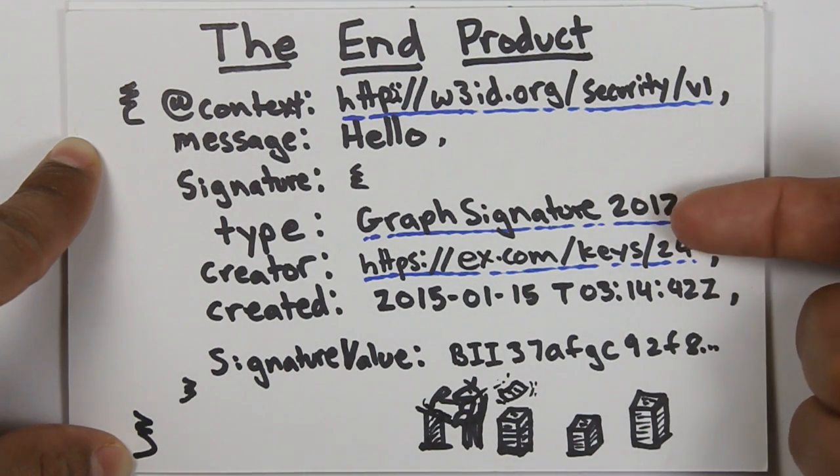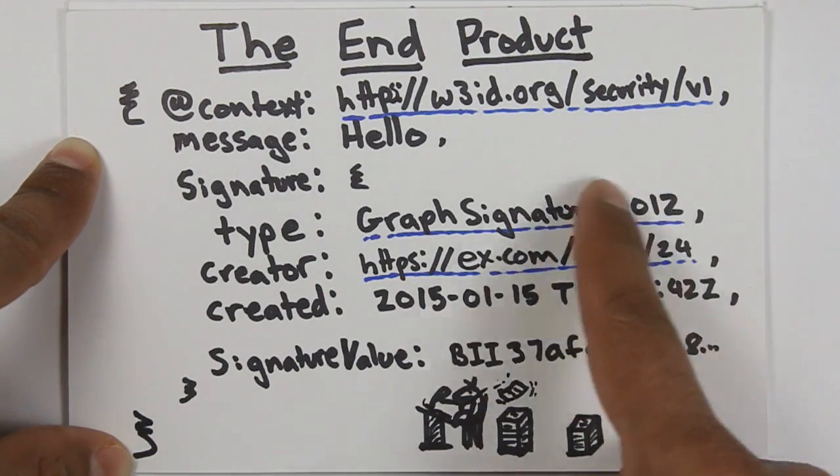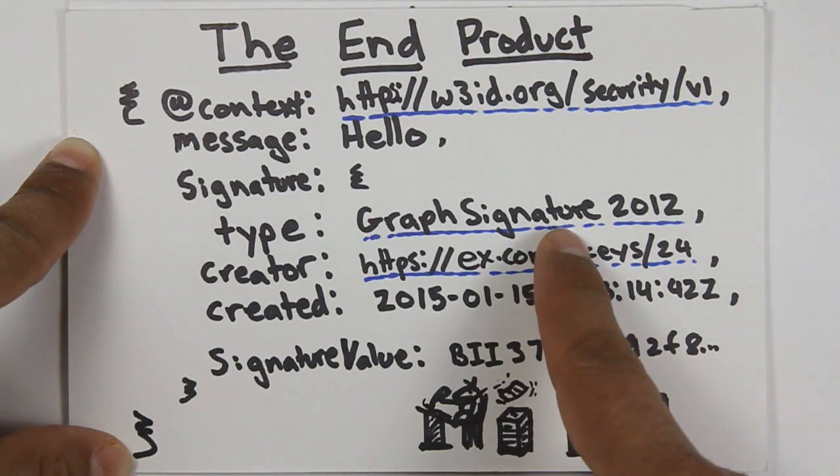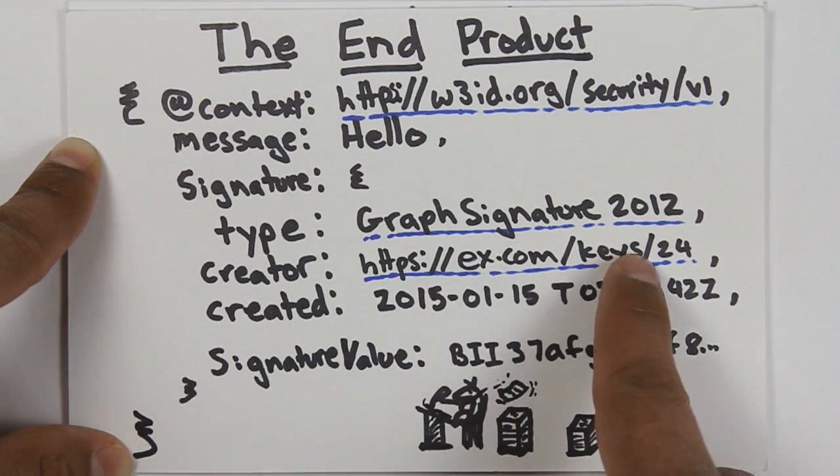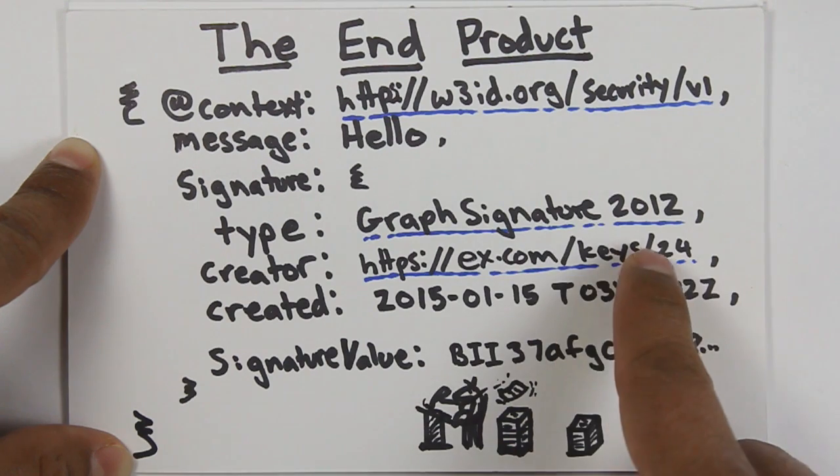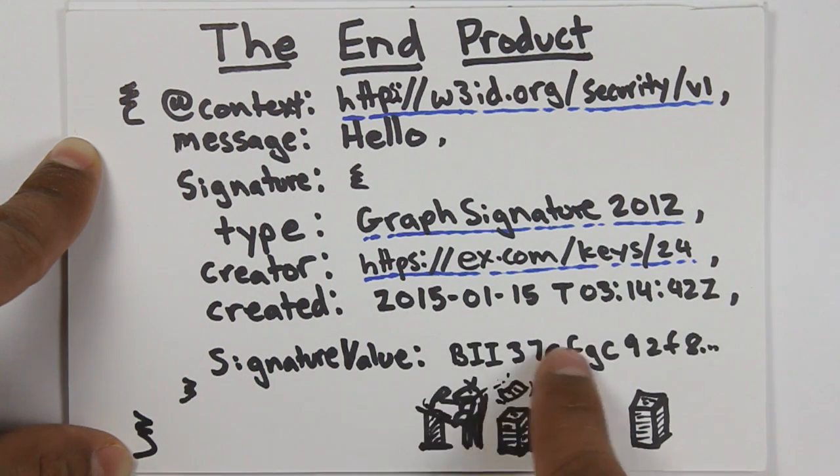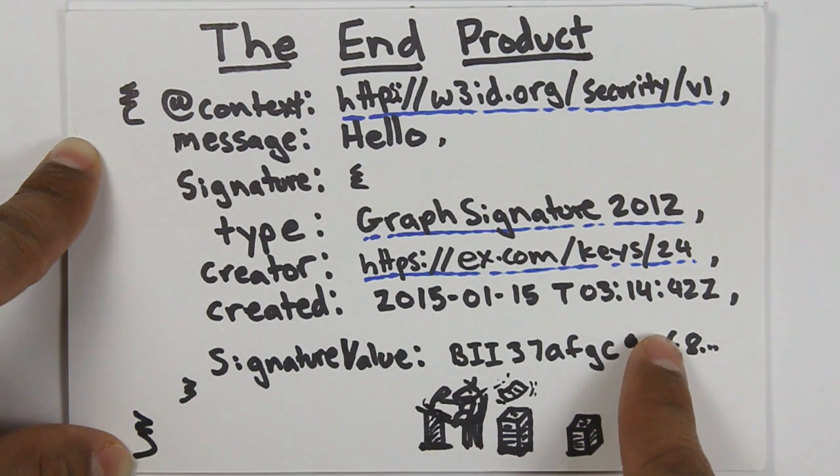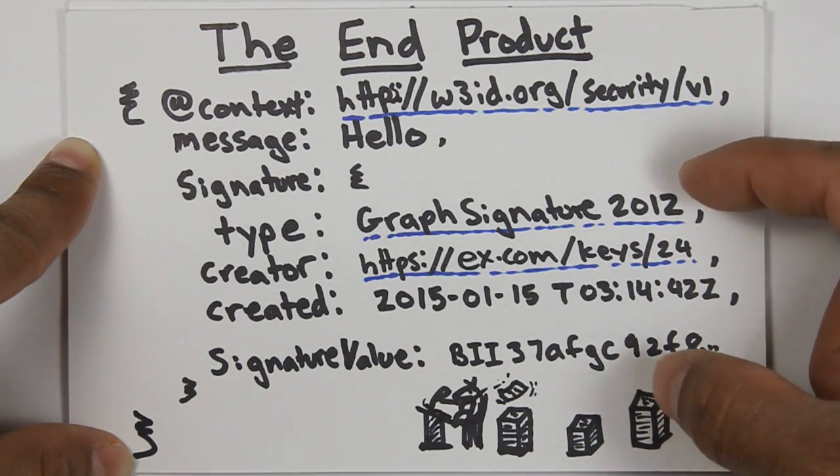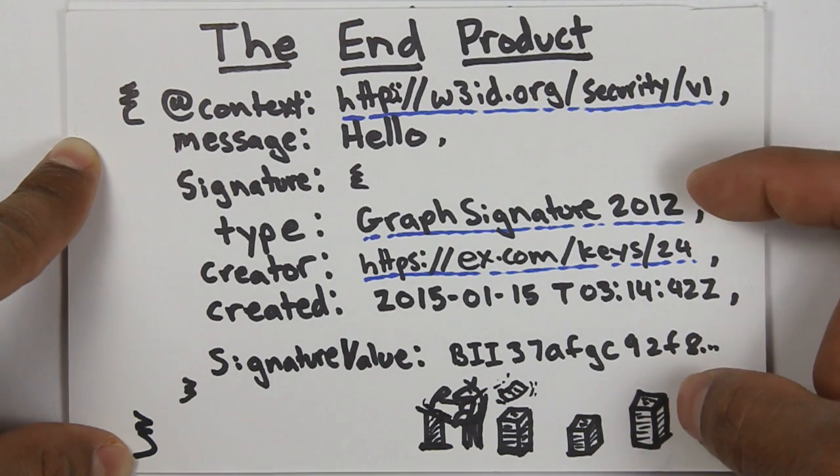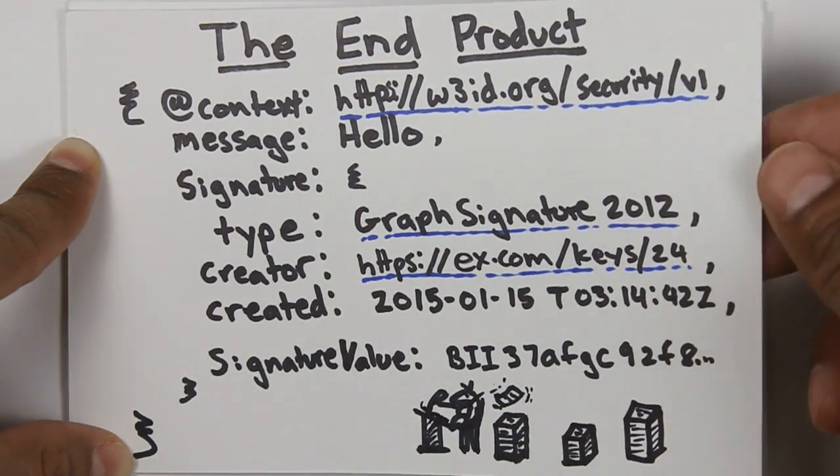It consists of four fairly simple pieces of data. We have the type of the signature, which is how the signature was created and how the verifying side should verify the signature. We have the creator of the digital signature, which in this case is a particular private key or public key associated with a private key. We have the date that the signature was created, and then we have the signature value itself down here at the bottom. This is what a linked data signature looks like. It doesn't get any more complicated than this really. These are the types of signatures we want to use on the web.